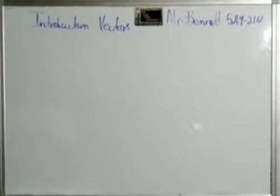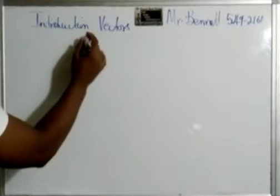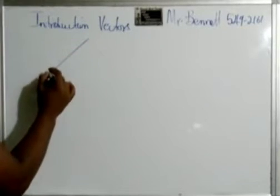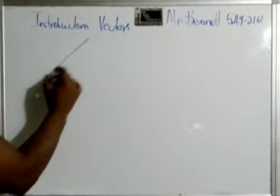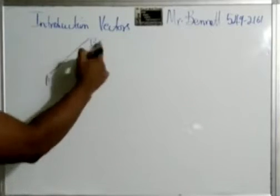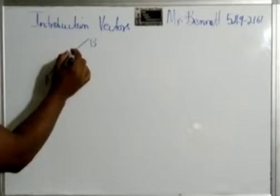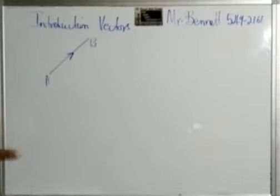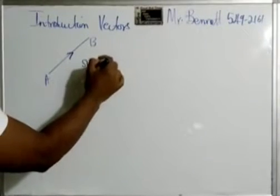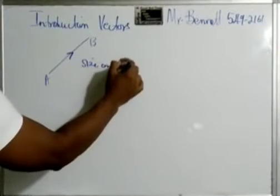Now a vector can be described as basically it must have two things. One, a size. So for example from A to B, the size of that can be specifically probably three centimeters or whatever. And it must have a next thing which is a direction. So two things your vector must have: one, a size, and a direction.